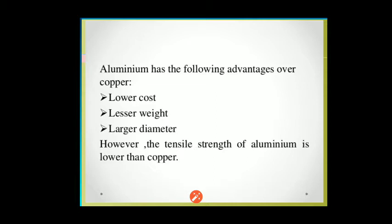Aluminium has the following advantages over copper: lowest cost, less weight, and large diameter. However, the tensile strength of the aluminium conductor is lower than copper. For the same current capacity, a copper conductor requires a 1.0 mm² cross-section, while the equivalent aluminium conductor requires 1.5 mm².